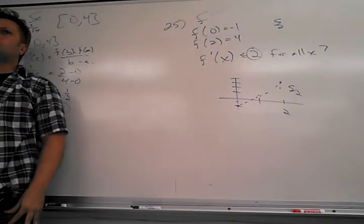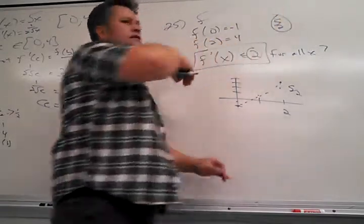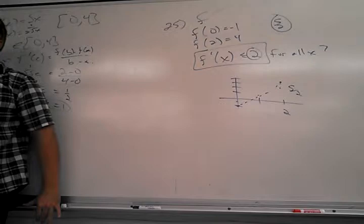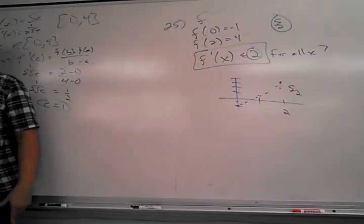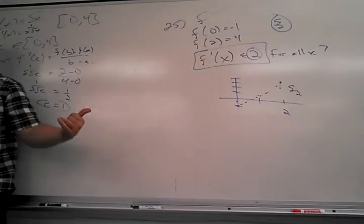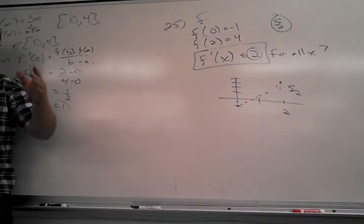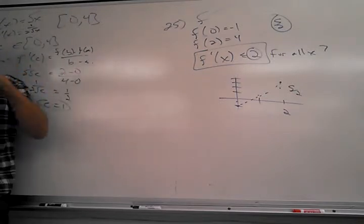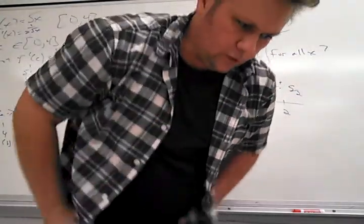They're restricting you to the slope. My slope is restricted to two, and I can't reach the five halves that I need. Even before the mean value theorem, you could just count and go — no, I can't make it up there. If you don't give me a slope big enough to get there, I can't make it there.